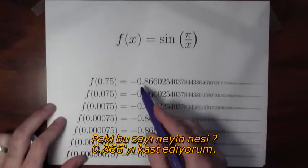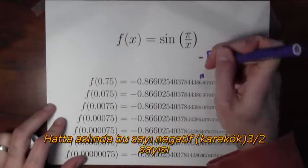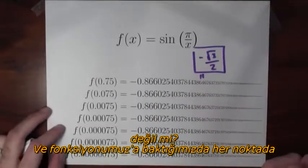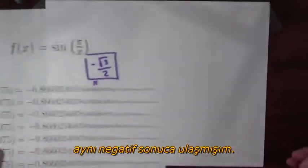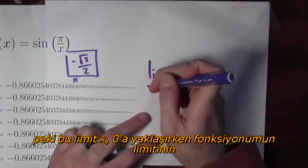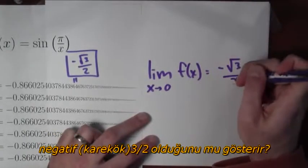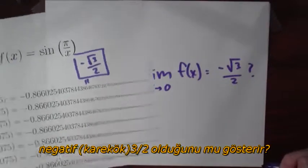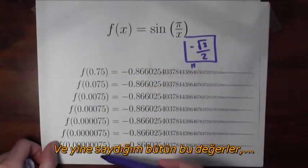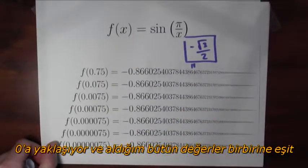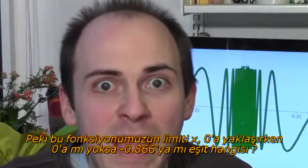Well, what is this number? I mean, 0.8666, this isn't just some random number. This is, in fact, negative the square root of 3 over 2. And it looks like this function at all of these points has the same value, negative the square root of 3 over 2. So does that mean that the limit as x approaches 0 of f(x) is equal to negative the square root of 3 over 2? I mean, again, all of these values 0.75, 0.075, 0.0075, these input values are approaching 0 and the function's value at all of those inputs is the same. So what gives? Is the limit 0? Is it negative 0.8? Which is it?